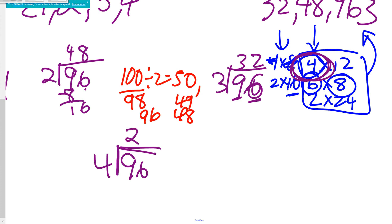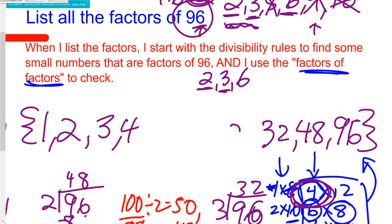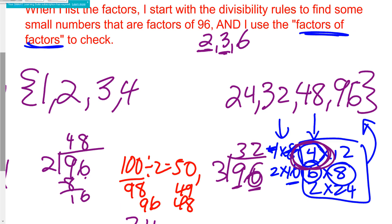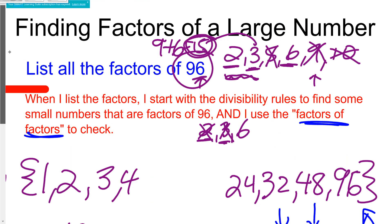4 goes into 9 twice, 2 times 4 is 8, subtract, bring down the 6, 4 goes into 16 four times. Oh, and there's my 24. I just saw 24 was going to work, here it is right there. Now I know 24 works, 4 works. I've done 2, I've done 3, I've done 4. I know from my divisibility rules that 5 is not going to work.